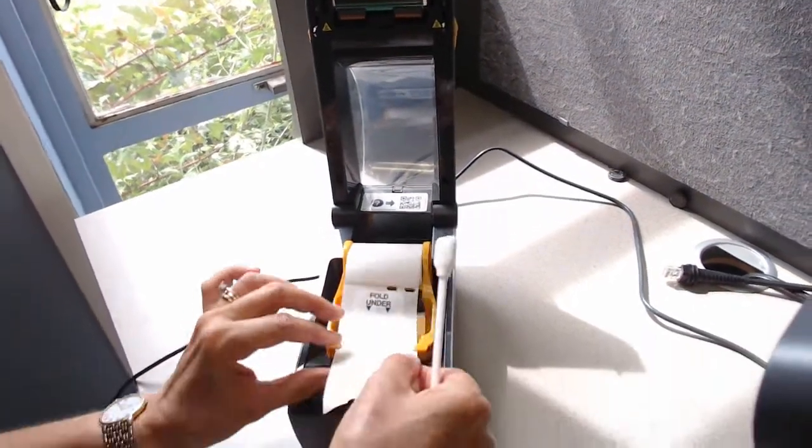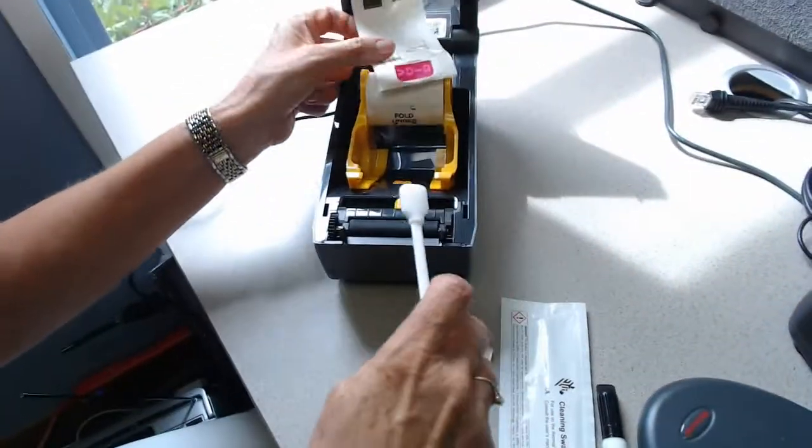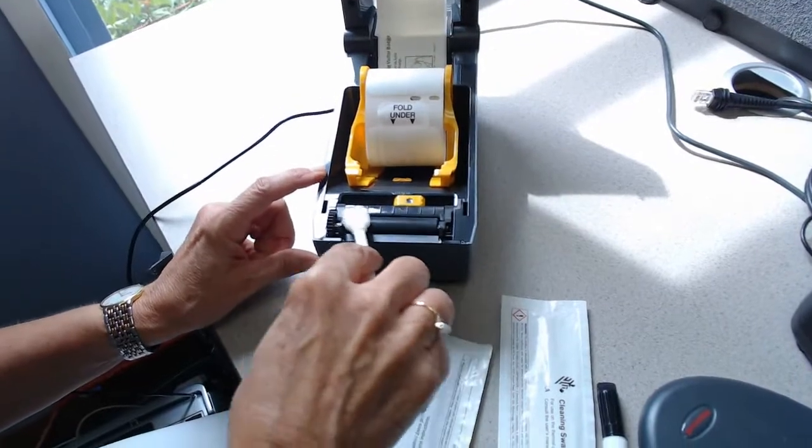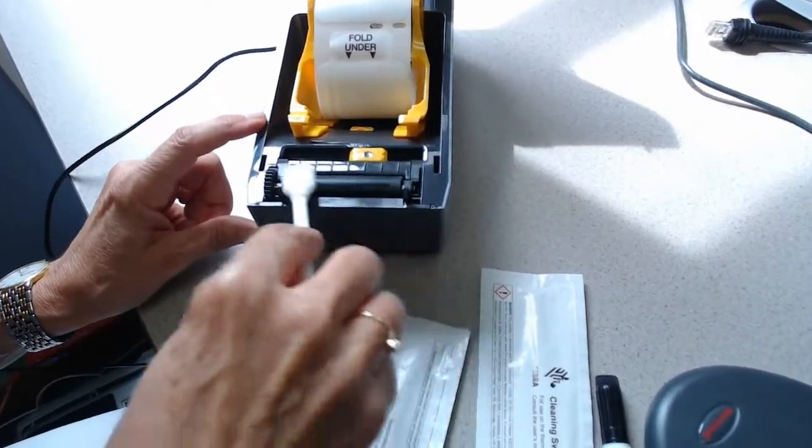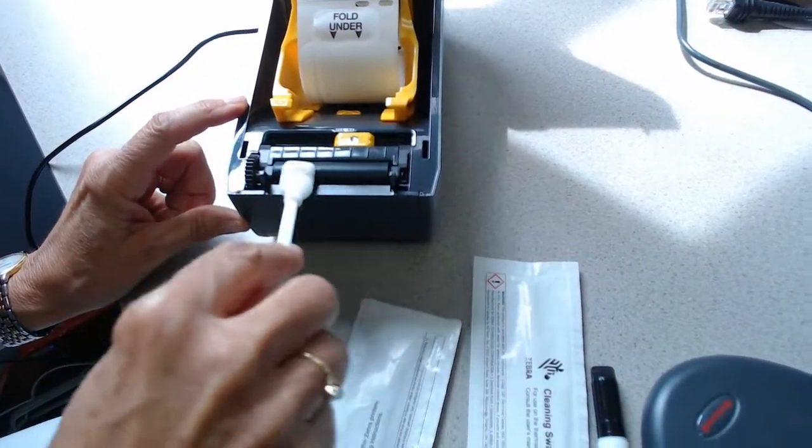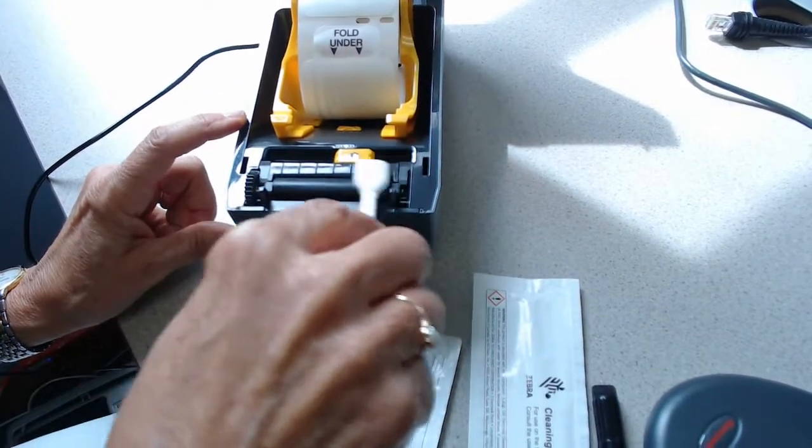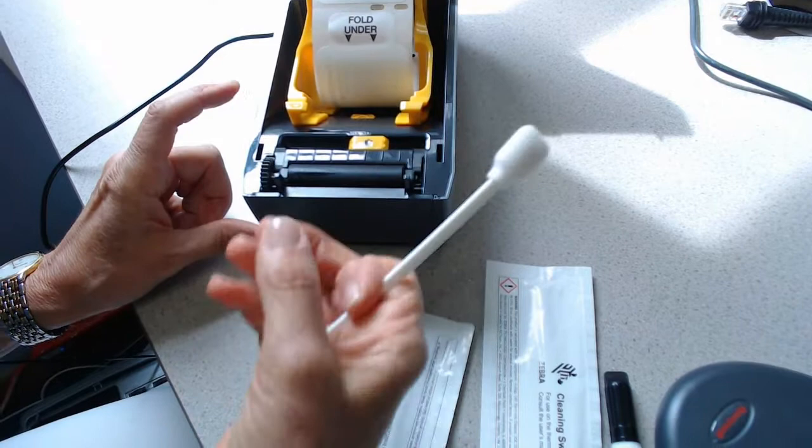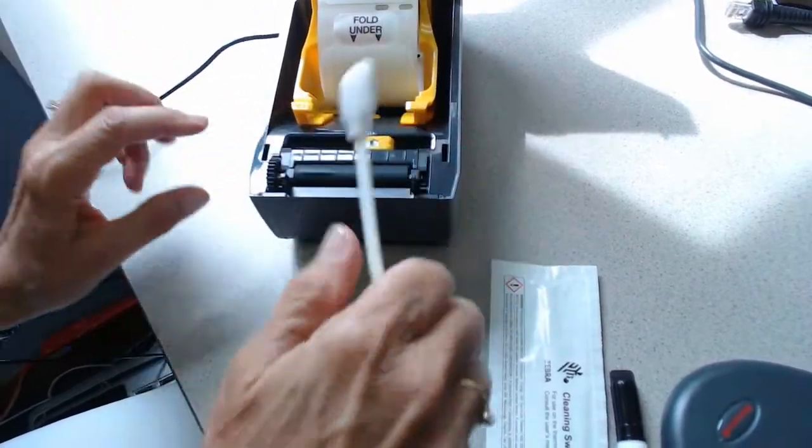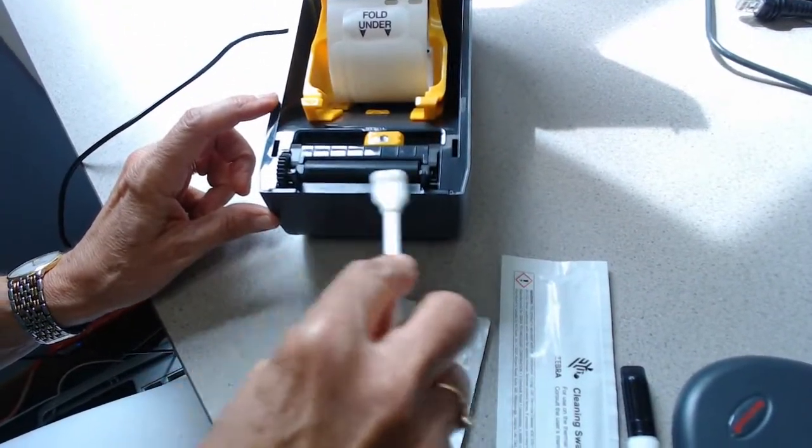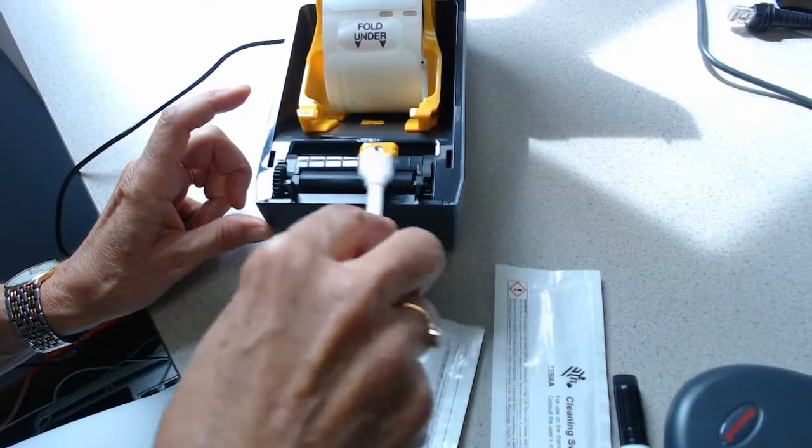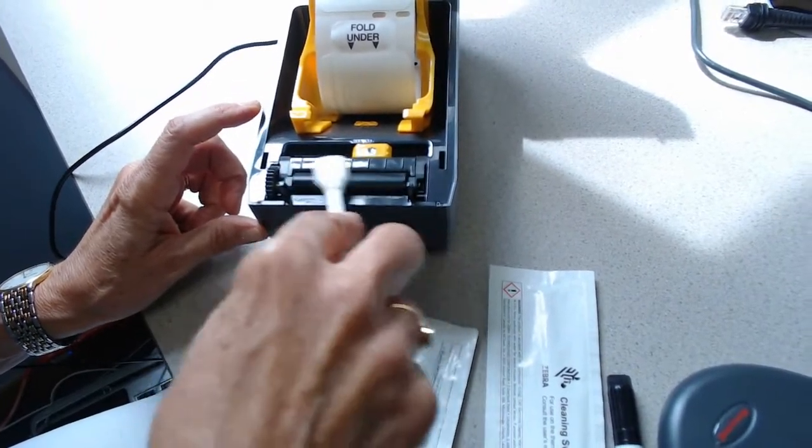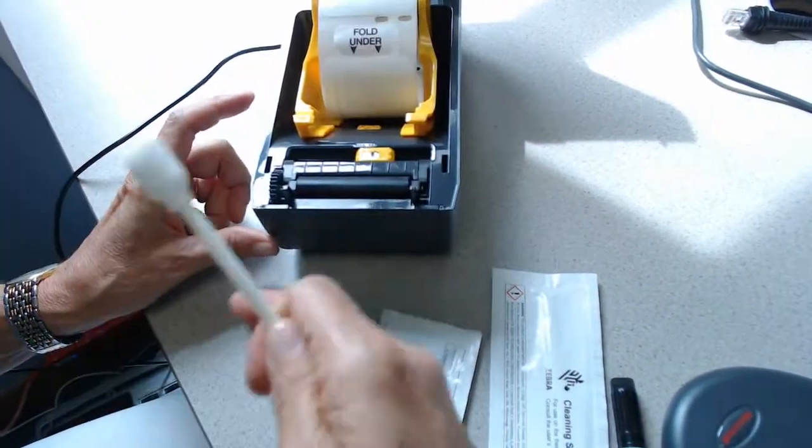And then the other area that you're going to clean is the roll. This is where the adhesive labels come out. Because it is a direct thermal heat activated printer, many times a small amount of adhesive will ooze out on this roller. So you want to make sure that this is kept very clean as well so that the badges can roll through nice and easy.